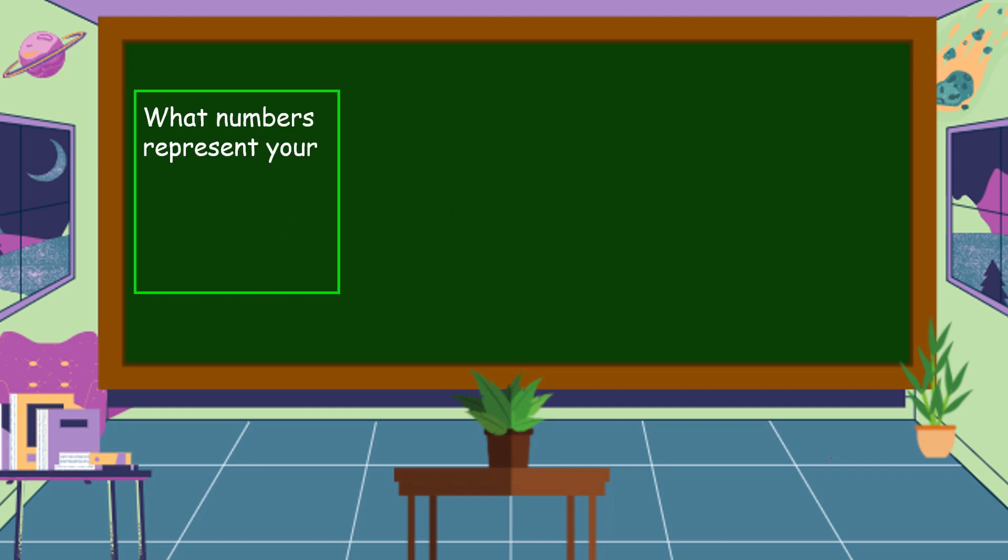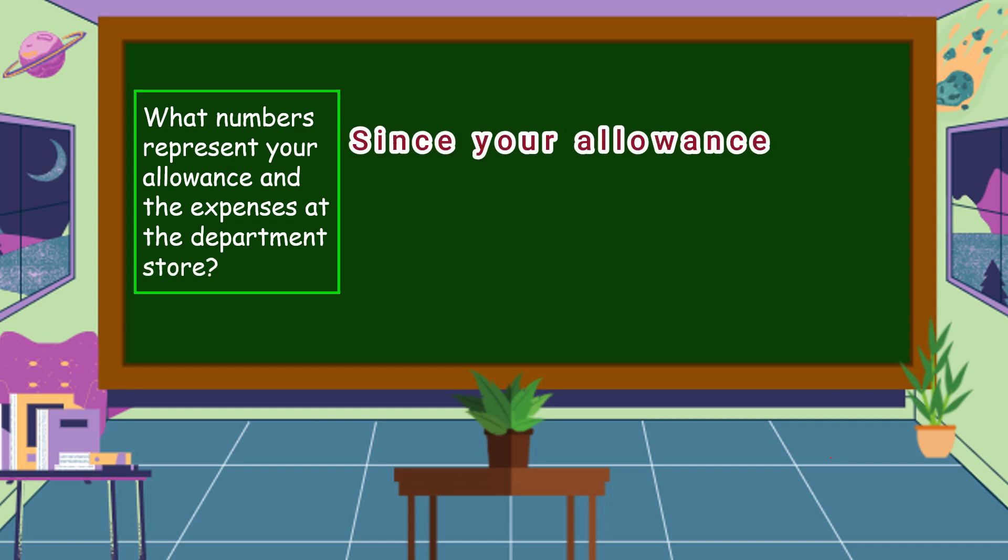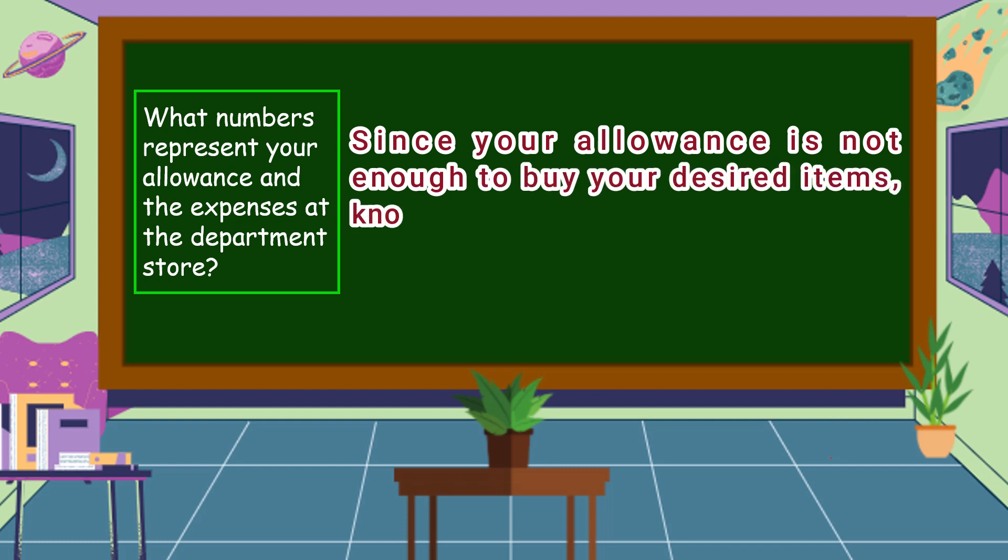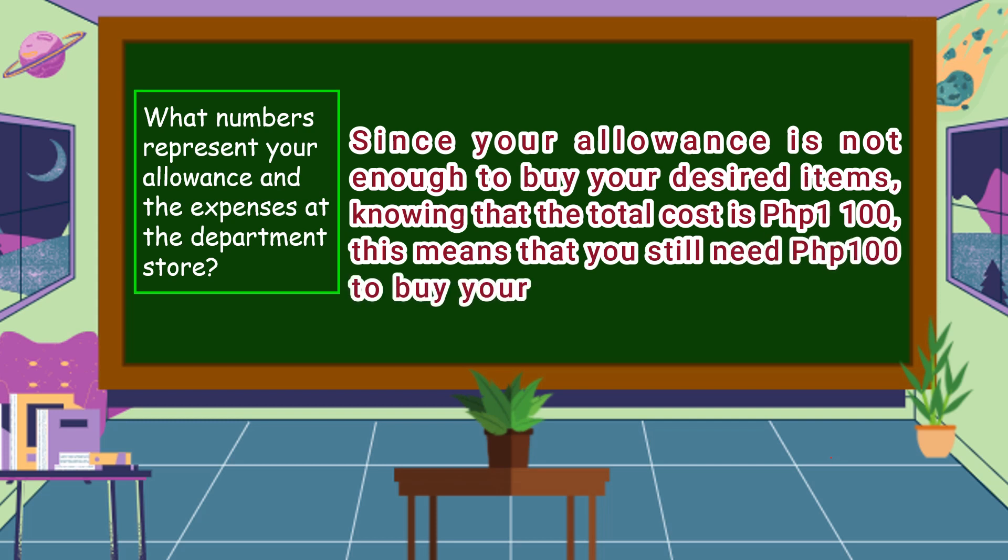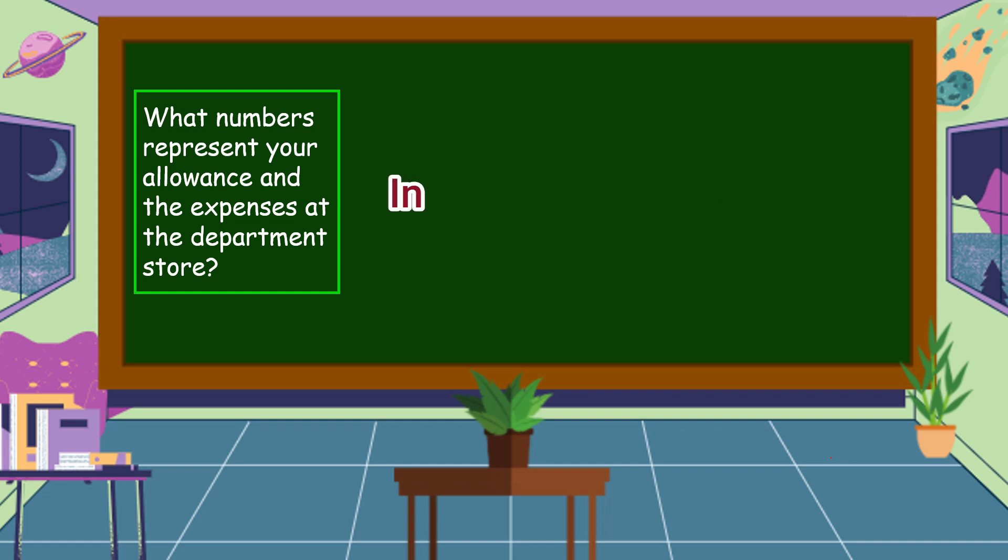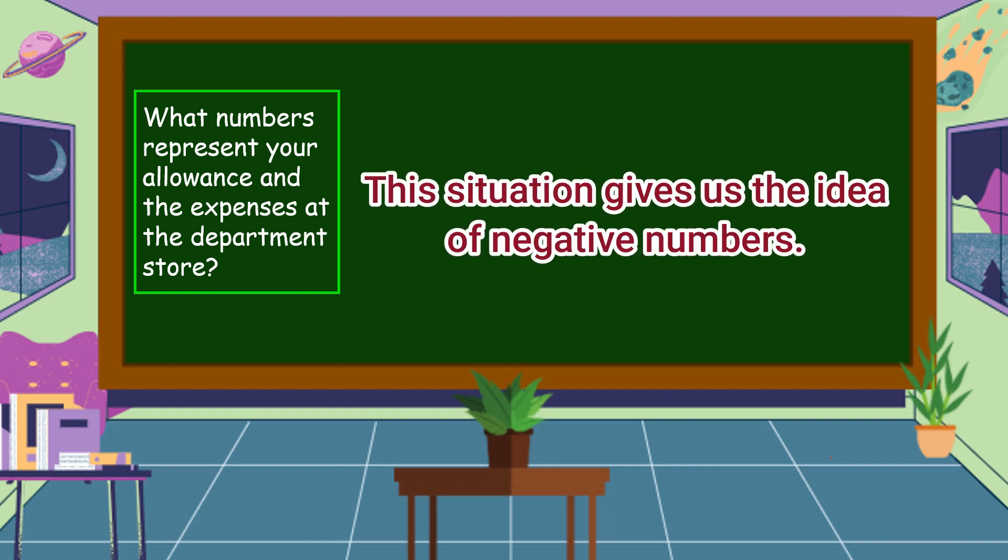What numbers represent your allowance and expenses at the department store? Since your allowance is not enough to buy your desired items, knowing the total cost is 1,100 pesos, this means that you still need 100 pesos to buy your new pair of shoes and a shirt. In this case, your expenses is more than your allowance. This situation gives us the idea of negative numbers.